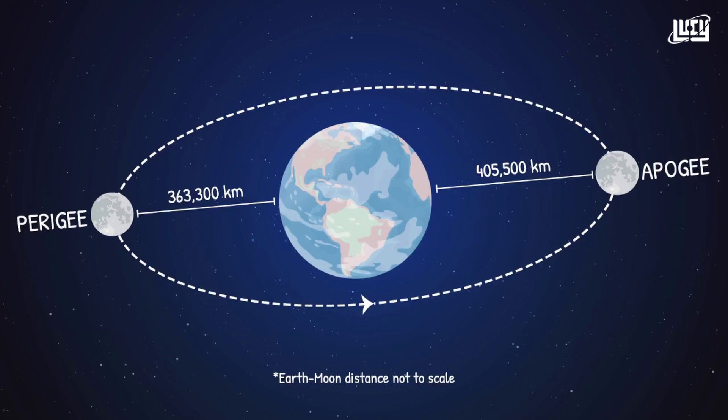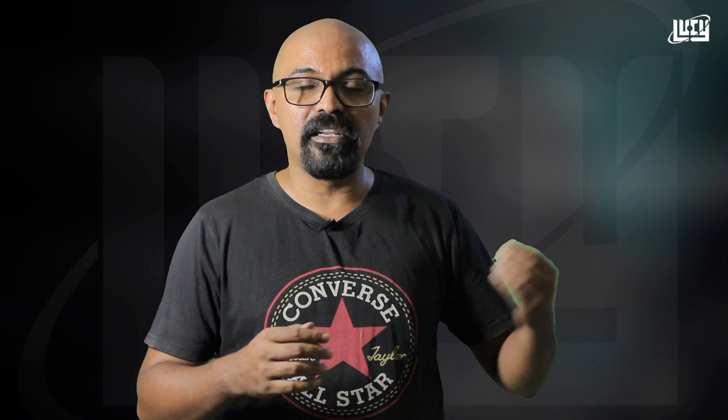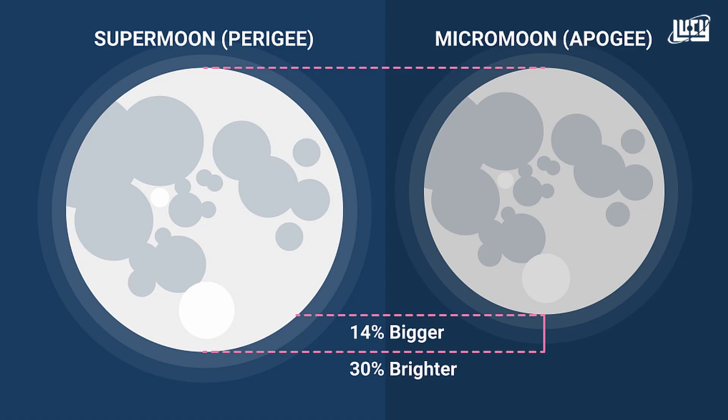We call it an elliptical orbit. If the earth is 3.5 km, if the earth is 4.5 km, we call it 3.5 to 4 km — we call it a boom. Perigee is a supermoon. We call it a supermoon — and then we call it the earth's supermoon.